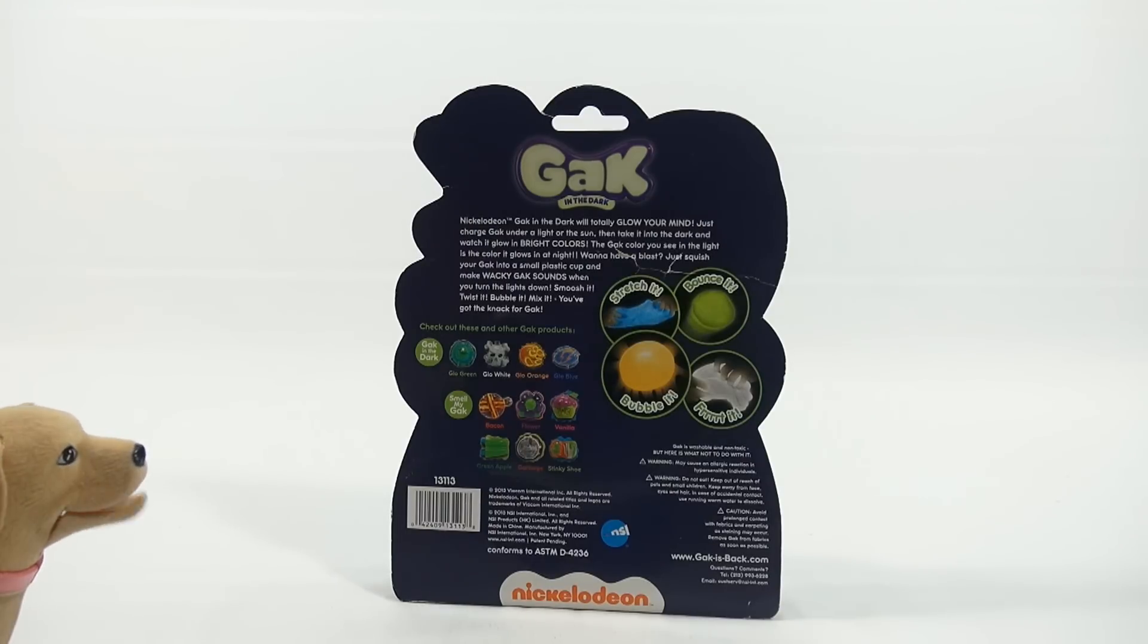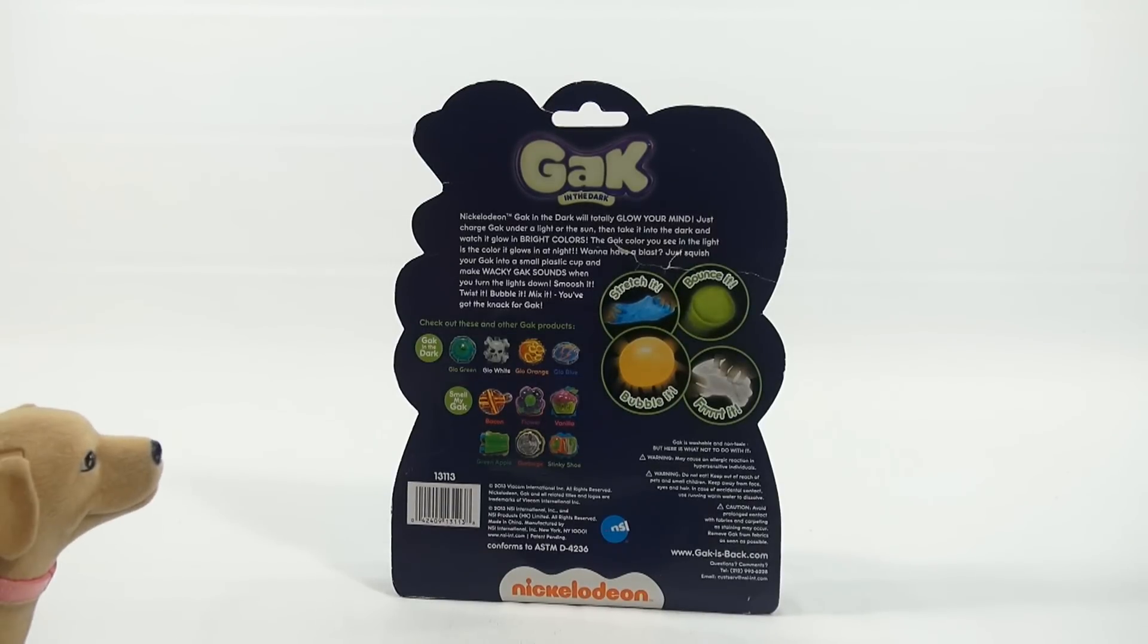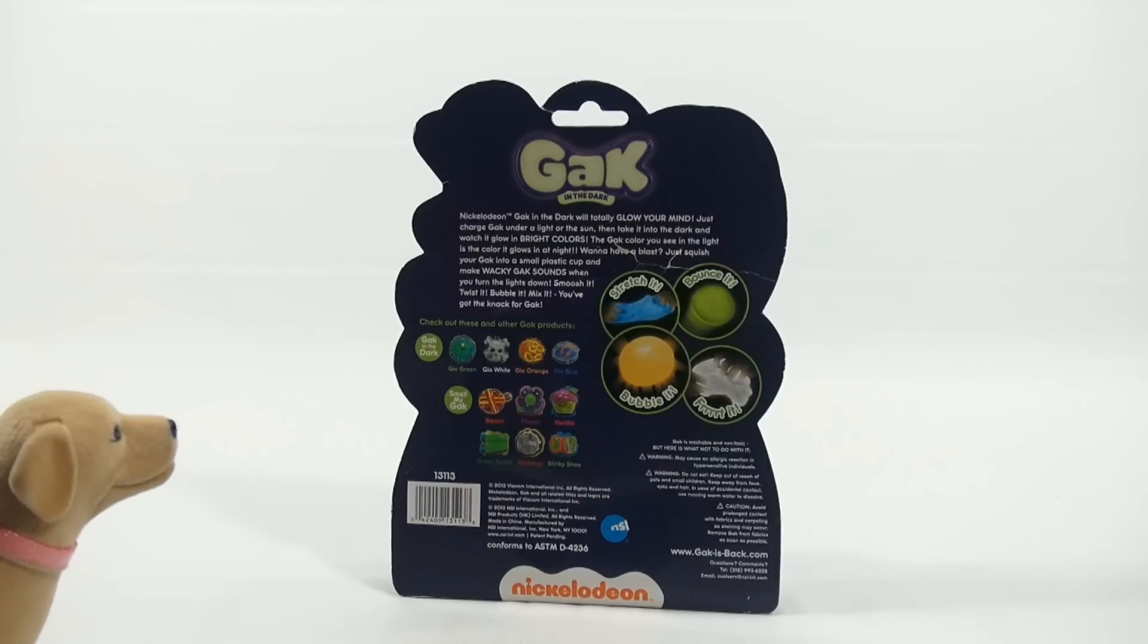Then take it into the dark and watch it glow in bright colors. The Gak color you see in the light is the color it glows in at night. Yeah, that rhymed. I like that. Want to have a blast? Just squish your Gak... Oh! What is it? Squish your Gak into a small plastic cup and make wacky Gak sounds. When you turn the lights down, smush it, twist it, bubble it, mix it. You've got the knack for Gak. Get the light, get the light. The light's fun.